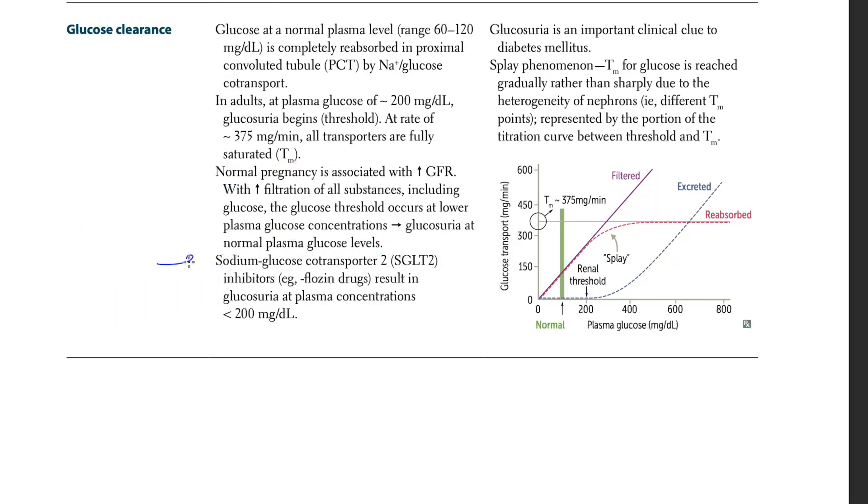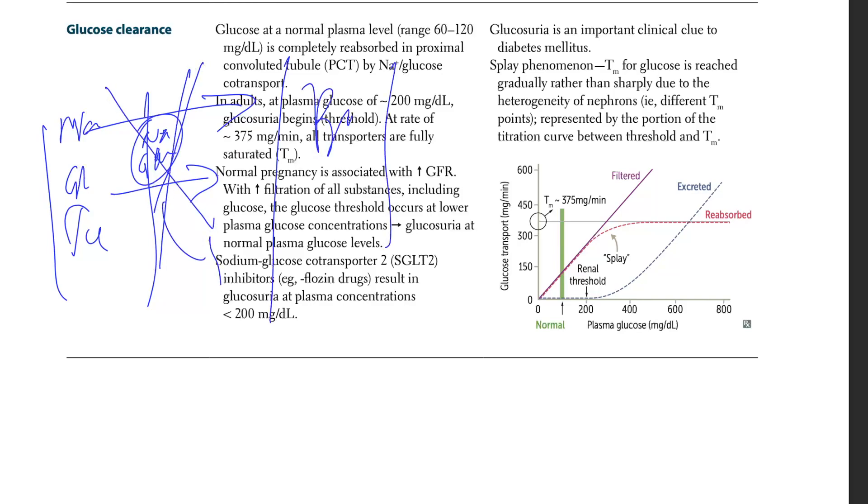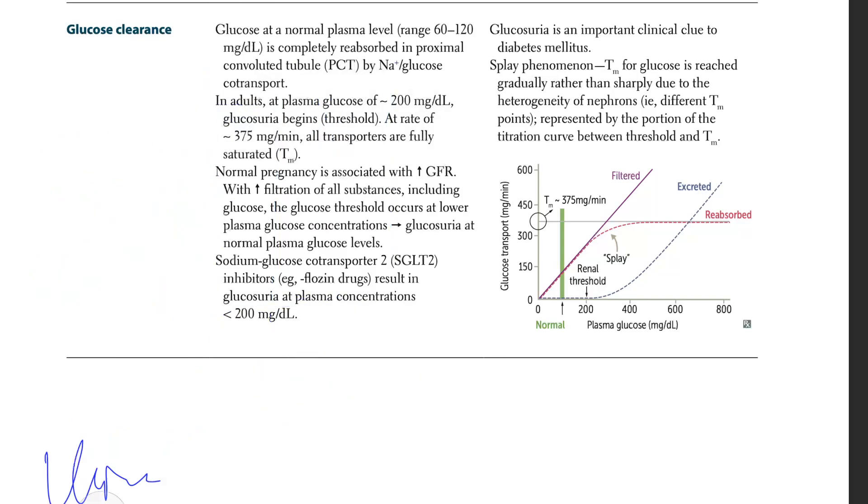Let's talk about sodium glucose co-transport 2 inhibitors, flozin drugs, which result in glucosuria. When you're inhibiting the sodium and glucose transporter, let me draw this. You have the tubule in which you have reabsorption from this channel, which is sodium glucose transporter SGLT2, in which you're going to pick up that sodium, pick up that glucose and bring it into the blood. But now when you knock these off by giving the drugs, the sodium might reabsorb later on, but the glucose is going to go in urine, leading to glucosuria at a plasma concentration less than 200, at any plasma concentration actually, because you're inhibiting those drugs.